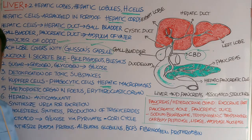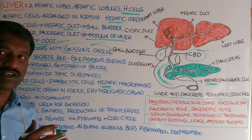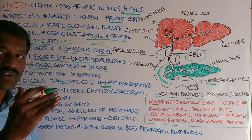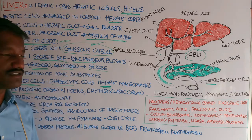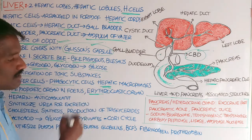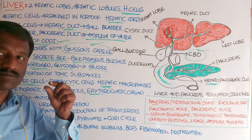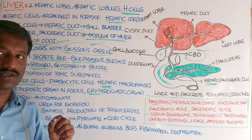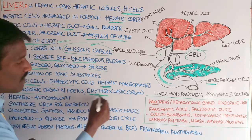The liver is a hemopoietic organ in the fetus. During fetal development in the mother's womb, it secretes red blood cells. The liver is also an erythroclastic organ, meaning it helps in the destruction of worn-out RBCs in adults, along with the spleen.